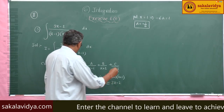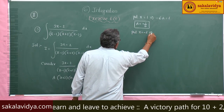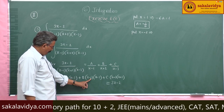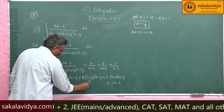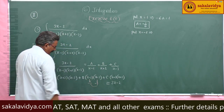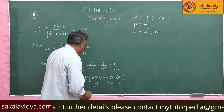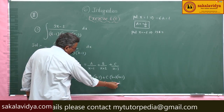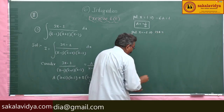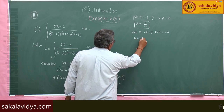Now put x equal to minus 2. If you put x equal to minus 2, the A and C terms become 0. We get (minus 2 minus 1)(minus 2 minus 3) times B equals 3(minus 2) minus 2, giving (minus 3)(minus 5) times B = minus 8, so 15B equals minus 8, therefore B equals minus 8/15.